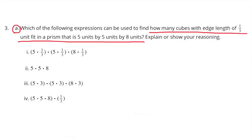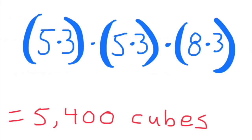Problem 3a: Which of the following expressions can be used to find how many cubes with edge length of 1/3 unit fit in a prism that is 5 units by 5 units by 8 units? Explain or show your reasoning. Cubes with edge length of 1/3 unit would be small enough to fit 3 cubes in each unit. So I selected 5 × 3 × 5 × 3 × 8 × 3, which turns out to be 5,400 cubes.